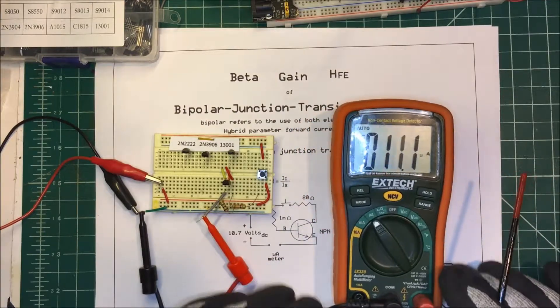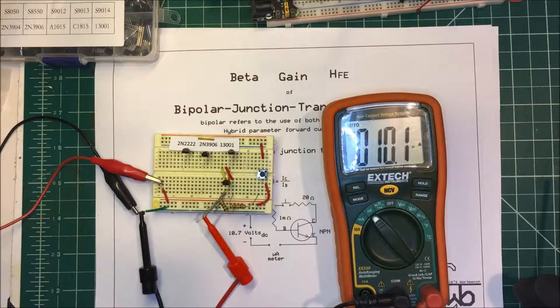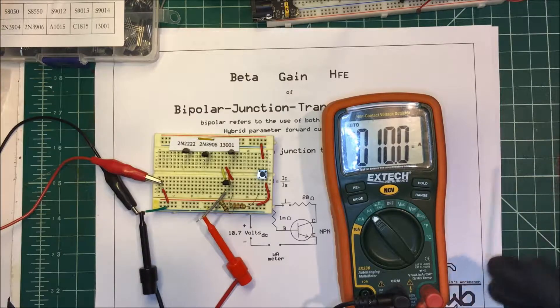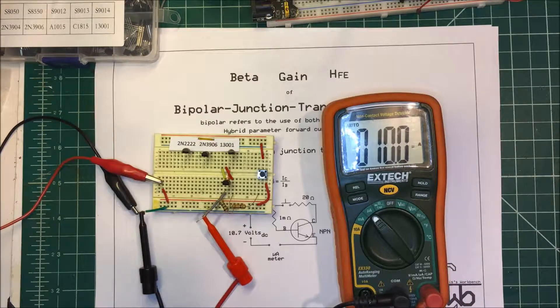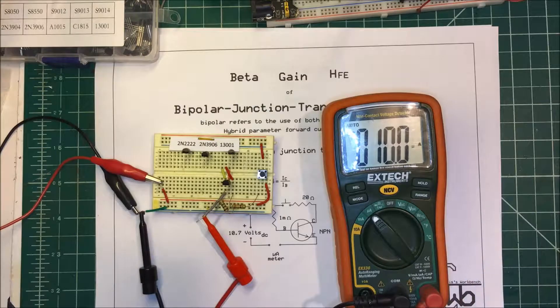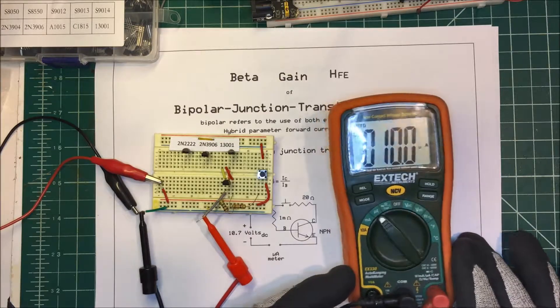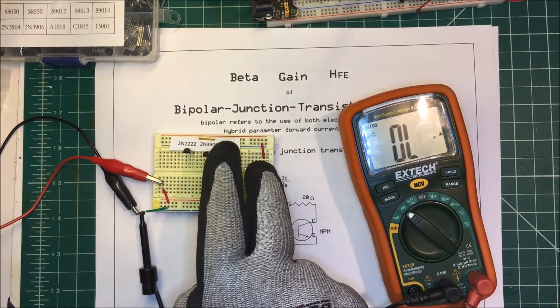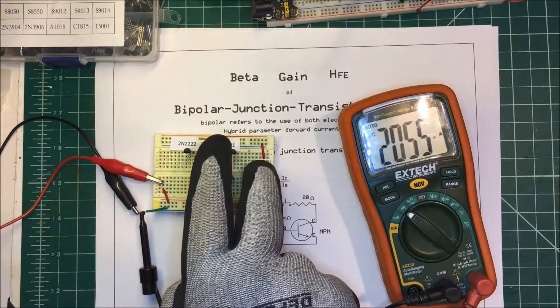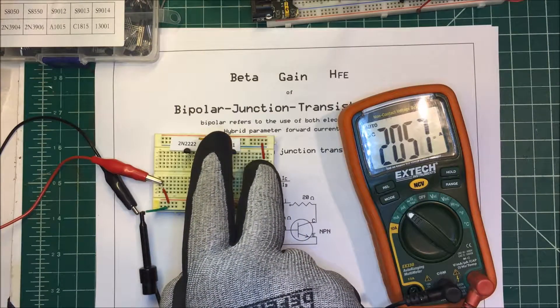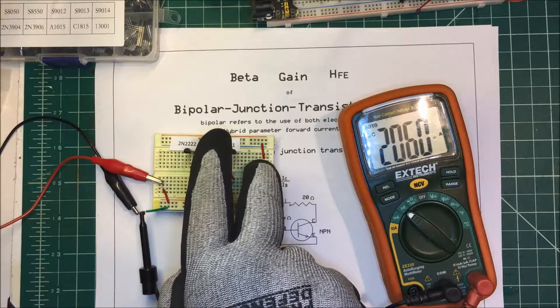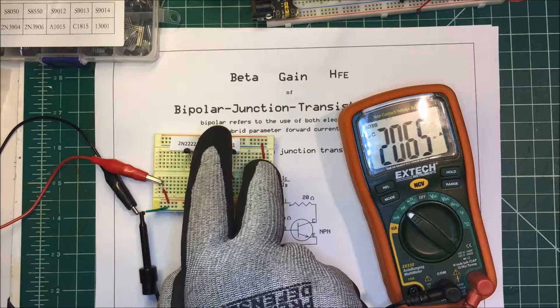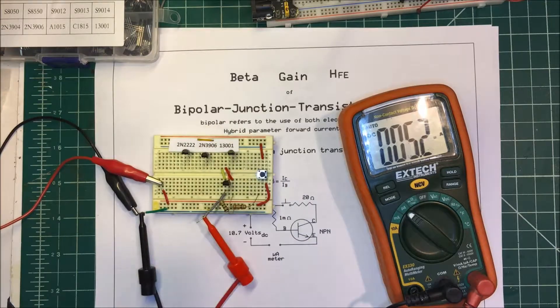I put my meter on microamps and I have 10 microamps. If I depress the button here, I've got 2060. So that means the gain in this transistor is going to be 206 divided by 10.